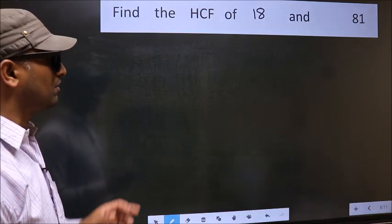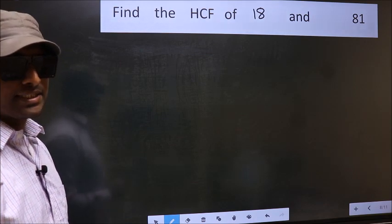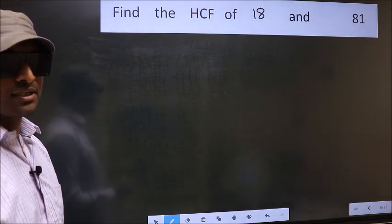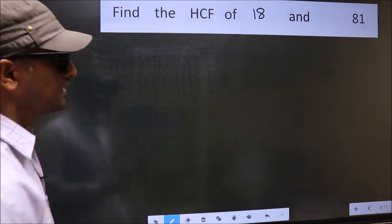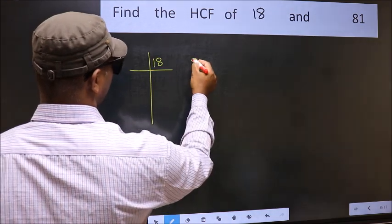Find the HCF of 18 and 81. To find the HCF, we should do the prime factorization of each number separately. What I mean is 18 and 81.